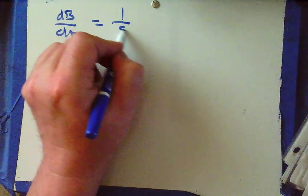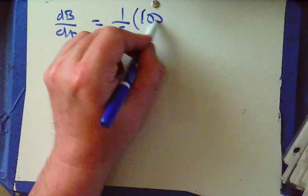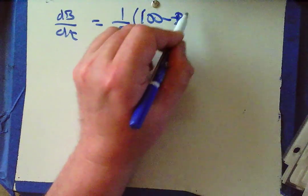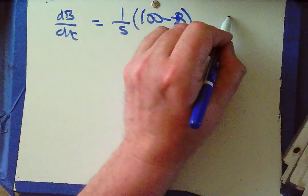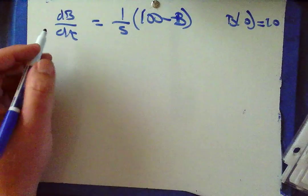Part c says use separation of variables to find B(t). They even told us to use separation of variables — they're really hoping you do that. dB/dt equals 1/5(100 minus B), and we know B(0) equals 20.